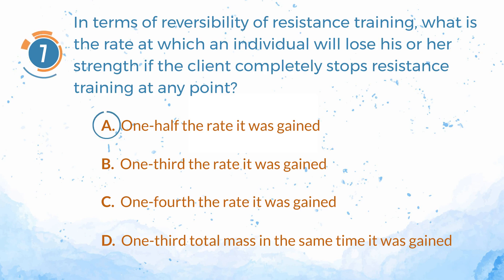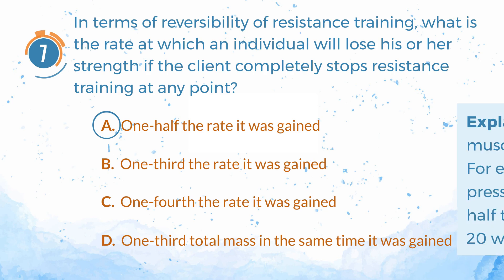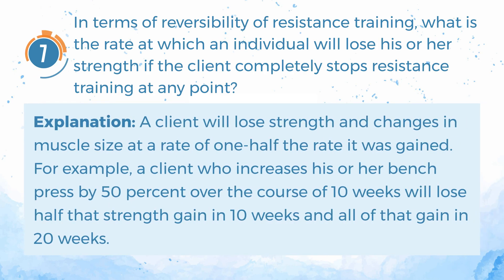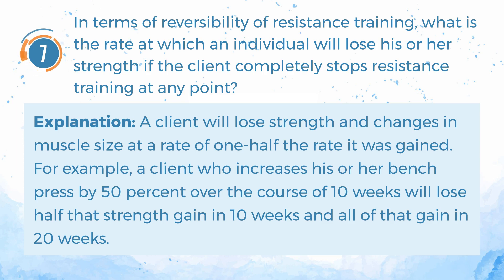The correct answer is A: one half the rate it was gained. A client will lose strength and changes in muscle size at a rate of one half the rate it was gained. For example, a client who increases his or her bench press by 50% over the course of 10 weeks will lose half that strength gain in 10 weeks and all of that gain in 20 weeks.